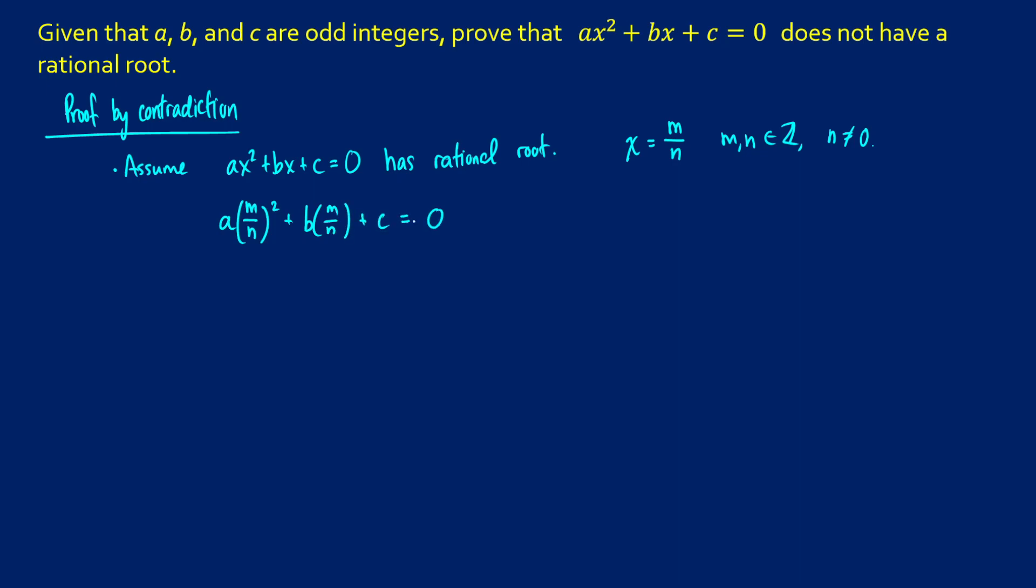Now, I don't want to deal with any sort of denominator, so what I'm going to do is multiply all of these by n squared. So we're going to get am squared over n squared plus bm over n plus c is equal to 0. If we multiply all of these by n squared, then we can get rid of the denominator.